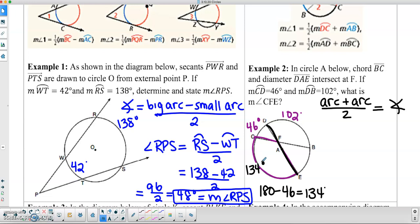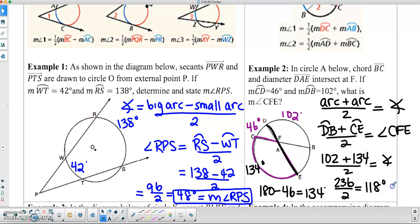So because we're going to add our two arcs together, we're going to use arc DB plus arc CE and then divide that by 2 in order to give us our angle of CFE. So in this case, DB is 102 degrees plus CE, which is 134 degrees, and then we're going to divide that by 2 to give us the angle. So 102 plus 134 is 236 divided by 2, which is going to equal 118 degrees, which represents the angle of CFE.